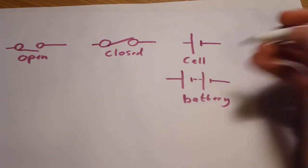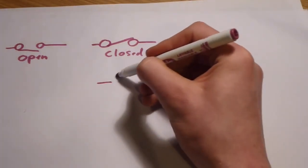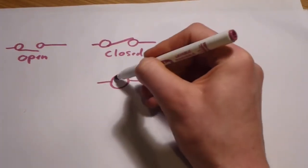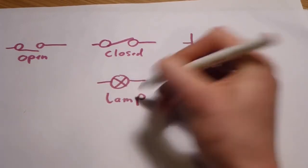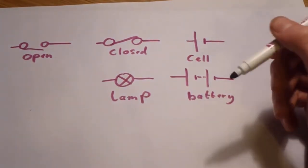Next, after the battery, there's a lamp. It's normally a filament lamp. It's drawn like this - a circle with a cross in it.